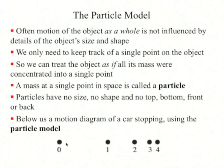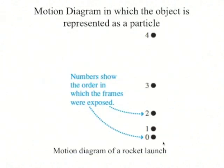Here is a motion diagram of the car stopping using the particle model. We simply draw dots getting closer and closer together. To indicate the direction of motion, we put labels on the dots showing increasing frame numbers. Here is a motion diagram of a rocket launching using the particle model — frames zero through four — and as the rocket goes upwards, it's speeding up.